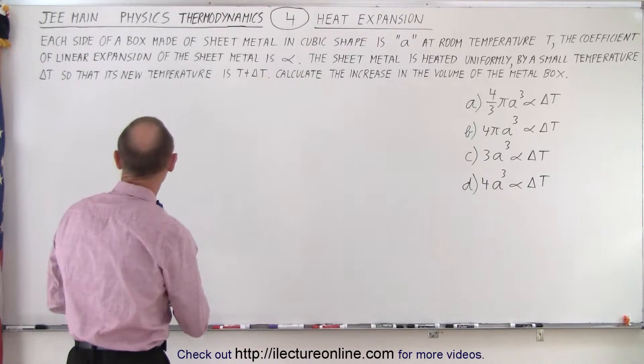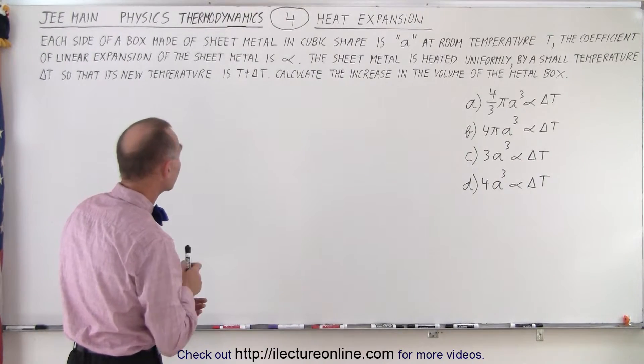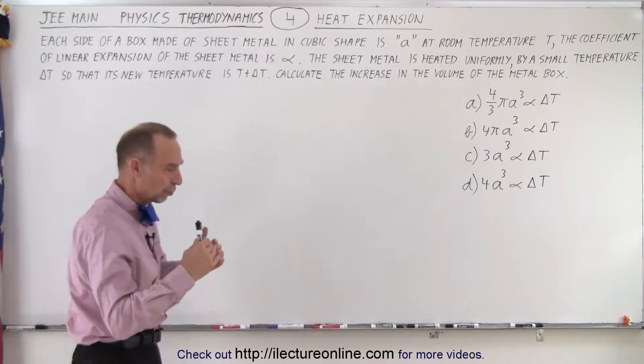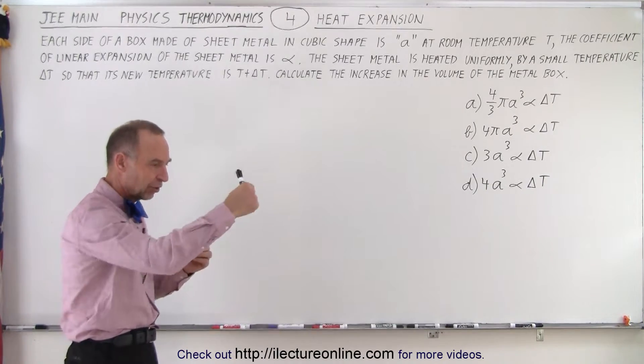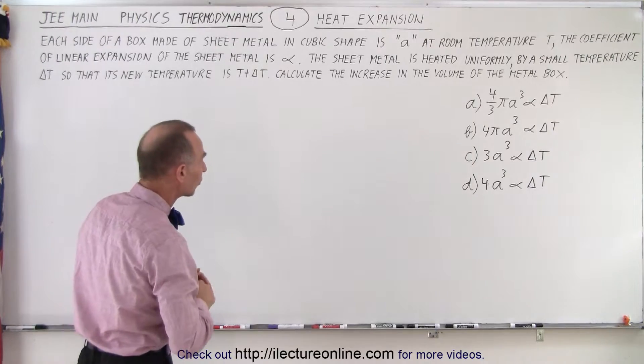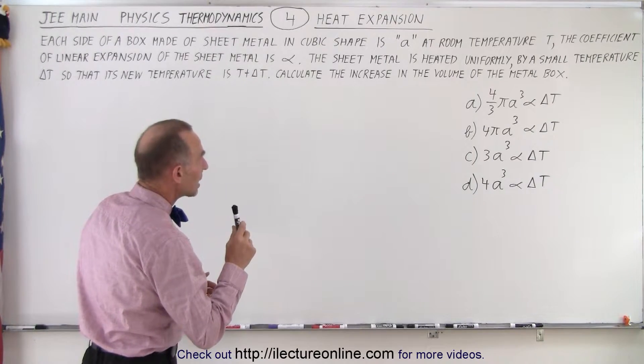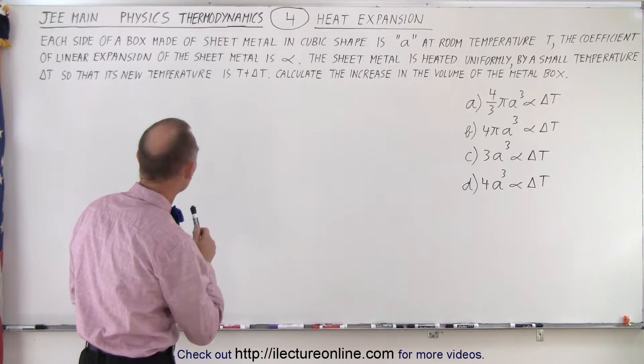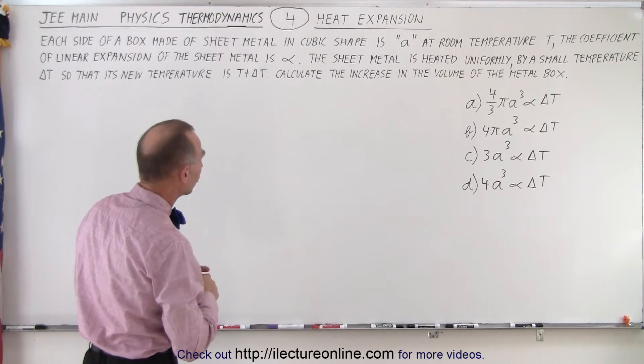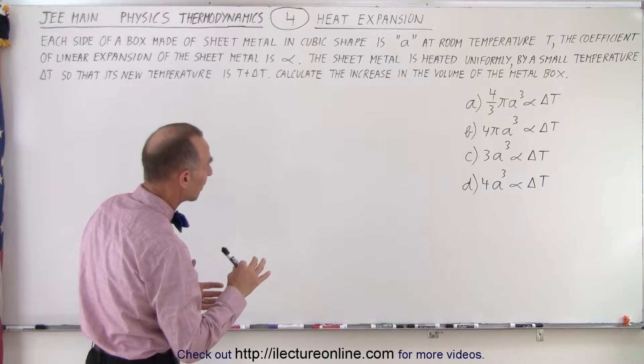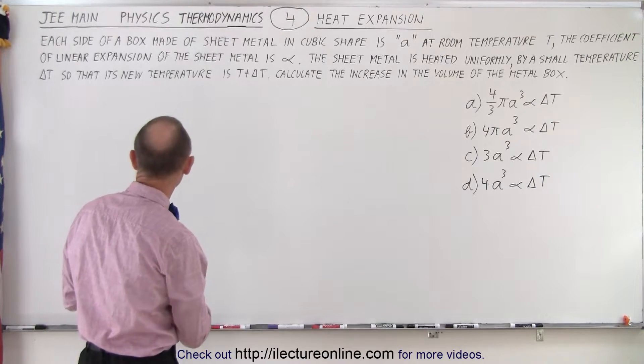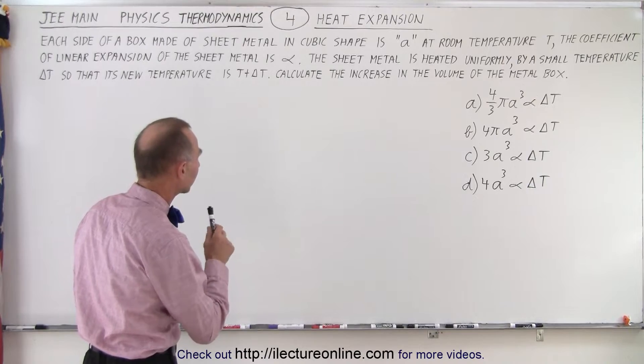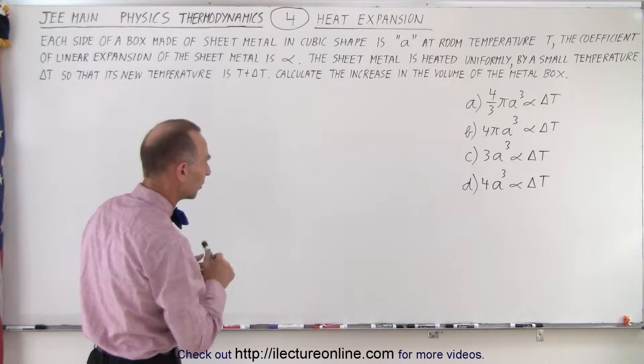So let's read the problem. Each side of a box made of sheet metal in cubic shape is A at room temperature. So it's a box, a cubic box, where the side is A in all three dimensions. The room temperature is T. The coefficient of linear expansion of the sheet metal is alpha. The sheet metal is heated uniformly by a small temperature delta T so that its new temperature is now T plus delta T. Calculate the increase in the volume of the metal box.